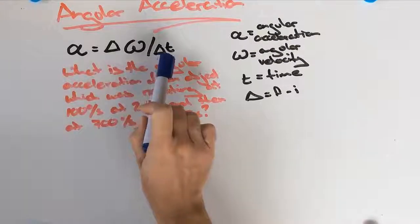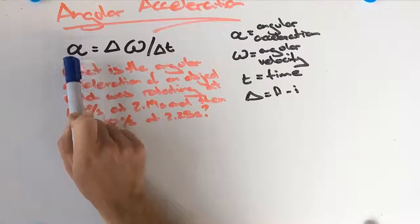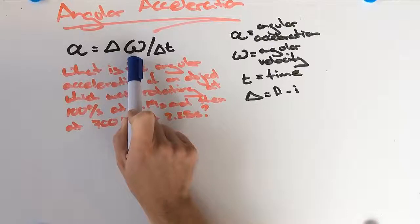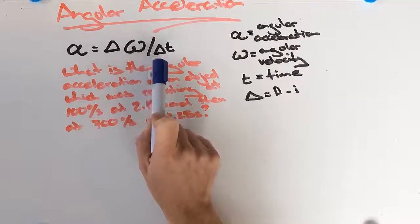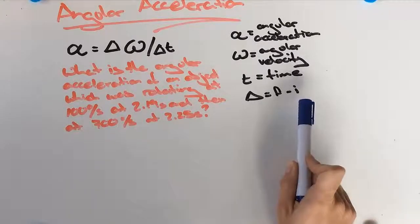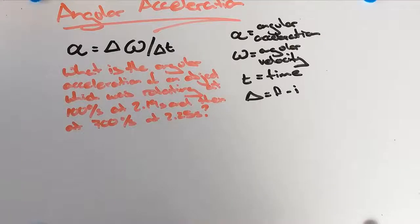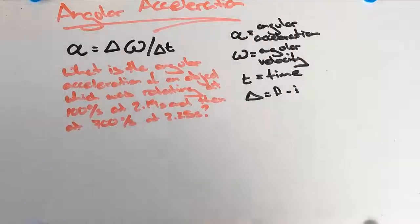Over here we have our formula for angular acceleration. Angular acceleration is equal to the change in angular velocity divided by our change in time. If we remember, our change in means final minus initial. So if we get a question that states: what is the angular acceleration of an object which was rotating at 100 degrees per second at 2.19 seconds, and then at 700 degrees per second at 2.25 seconds?